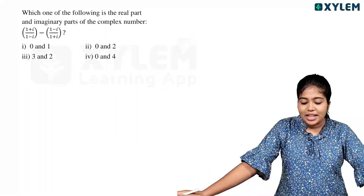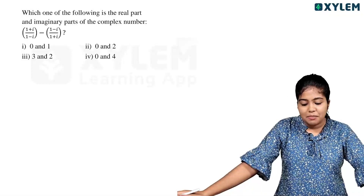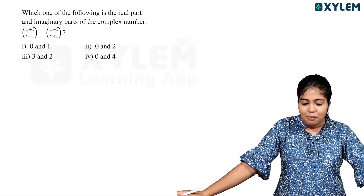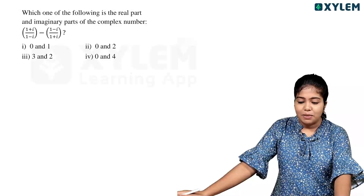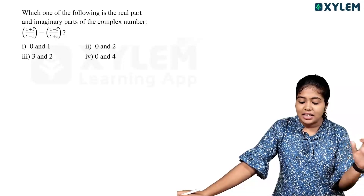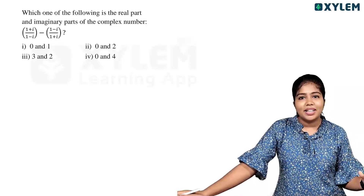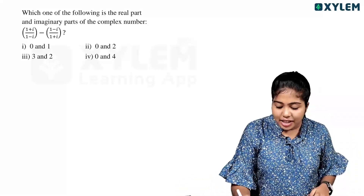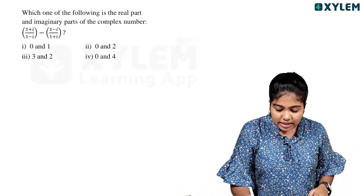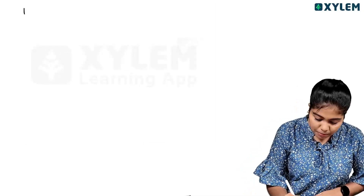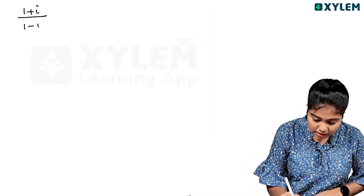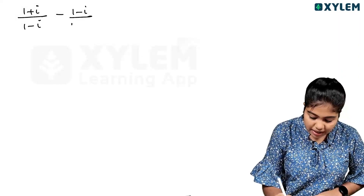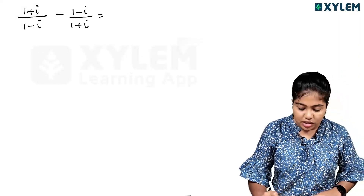Next question: which of the following is the real part and imaginary part of the complex number (1 plus i) by (1 minus i) minus (1 minus i) by (1 plus i)? We need to identify the real and imaginary parts of this expression.